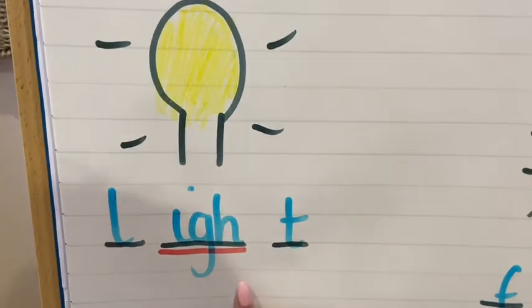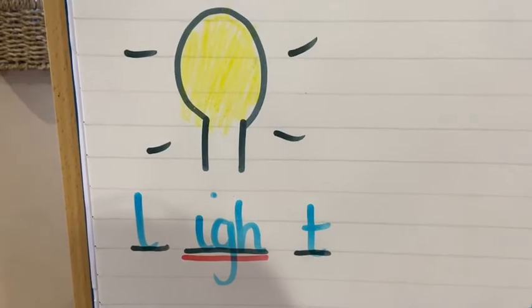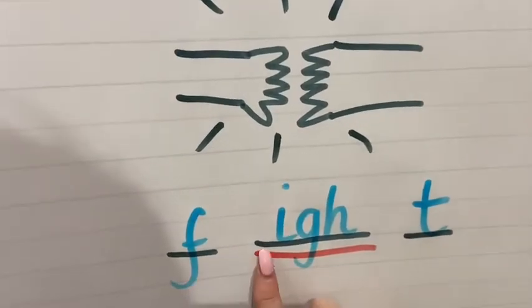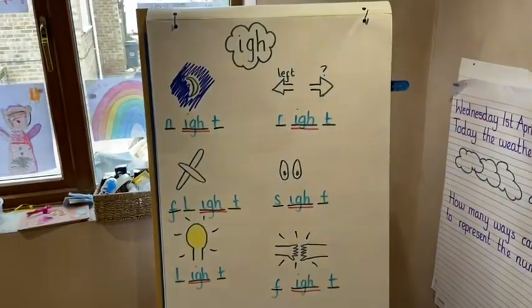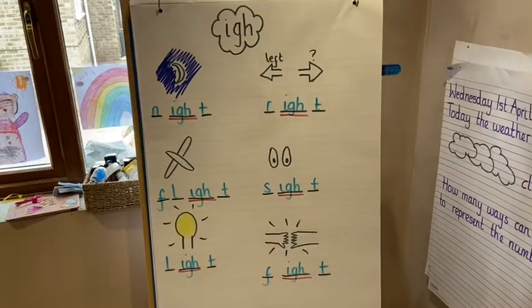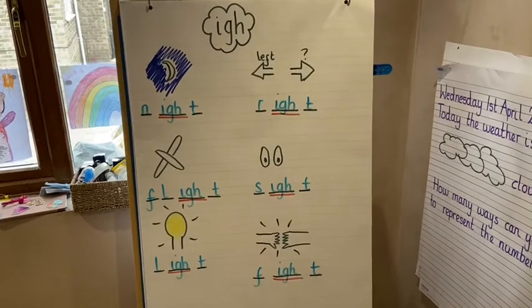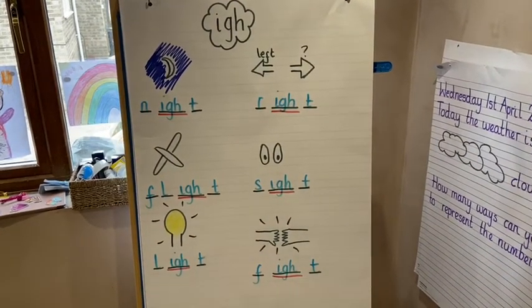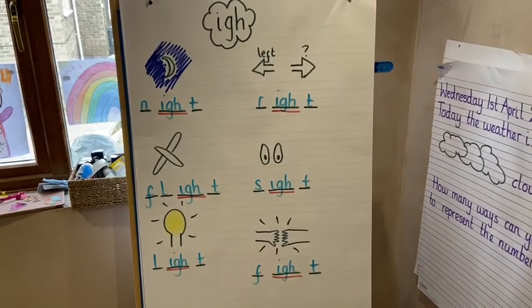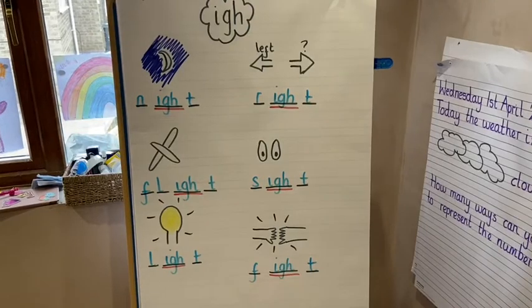I have got: light, l-i-g-h-t, light. Could also have bright. See if you can have a go at writing that one. And I have got: fight, f-i-g-h-t, fight. If I was going to write a sentence, I might write 'It gets dark at night' or 'The light is bright' or 'The car turns right'.